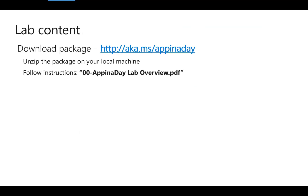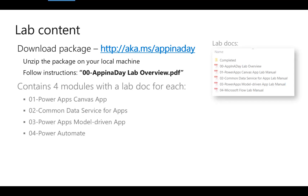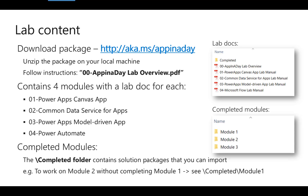In order to complete the lab, you will need to download the package and unpack it on your local machine. Follow the instructions in the lab overview PDF file. There are four modules in the lab documentation for each, and you can find the completed modules in the completed folder.